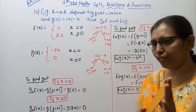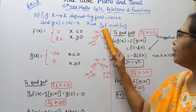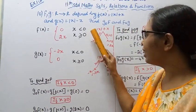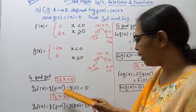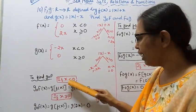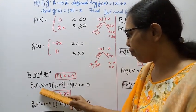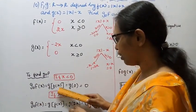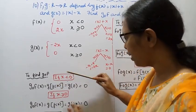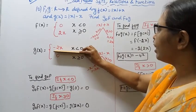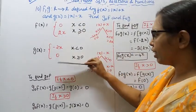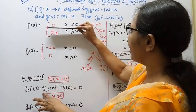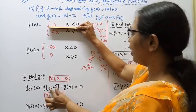Now we have f(x) and g(x) defined. To find f of g and g of f: for g composite f of x, that is g(f(x)), we consider the cases. When x is less than 0, f(x) is 0, and when x is greater than or equal to 0, f(x) is 2x.